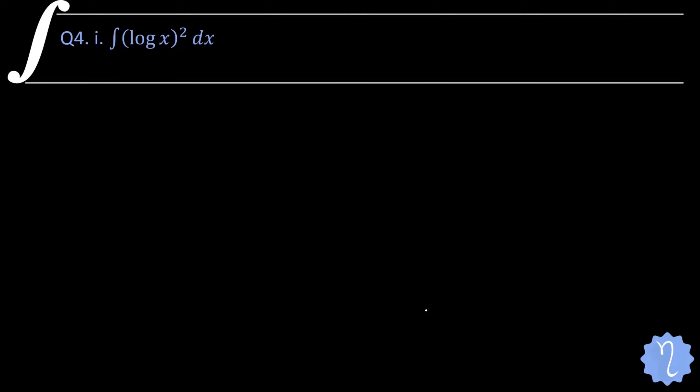In the first question we have integration of (log x) the whole square. In this part we have questions from the UV rule or the integration by parts rule. When we look at log x, we think of it as 1 into log x, calling 1 the algebraic function and log x the logarithmic function, then we apply integration by parts.